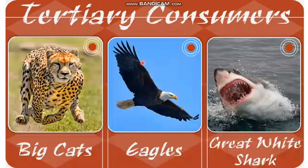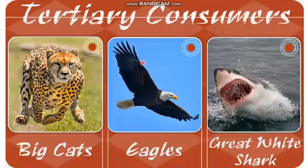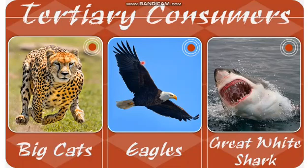Examples of tertiary consumers include big cats, eagles, and great white shark. You might be thinking: can an animal be both a secondary and tertiary consumer? Yes, it can. Humans, bears, and catfish are all examples of species that can be primary, secondary, and tertiary consumers. A lion, for example, can be both a secondary and a tertiary consumer. A single organism can fall into both categories — it can be secondary or tertiary depending on who eats whom.